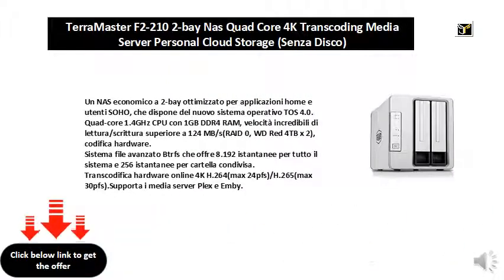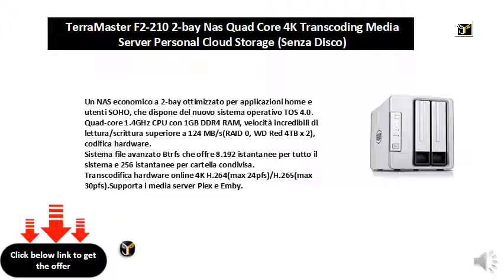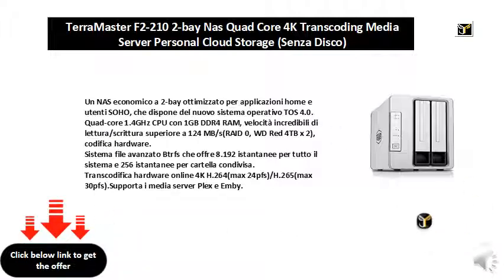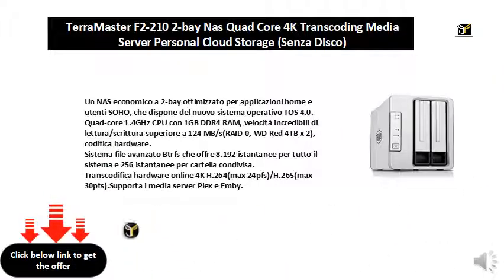An economical 2-bay NAS optimized for home applications and SOHO users, featuring the new TOS 4.0 operating system. It includes a quad-core 1.4 GHz CPU with 1 GB DDR4 RAM, delivering read-write speeds of over 124 MB/s. Configuration includes RAID 0, WD Red 4TB x2, hardware encoding, and an advanced BTRFS file system offering 8,192 snapshots for the entire system and 256 snapshots per shared folder.